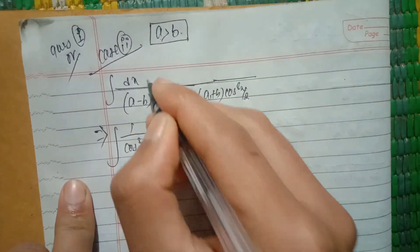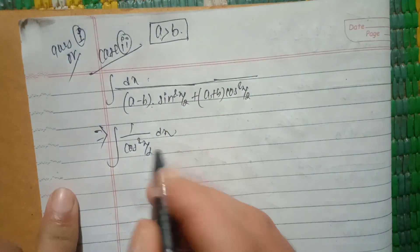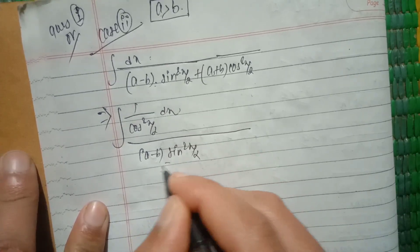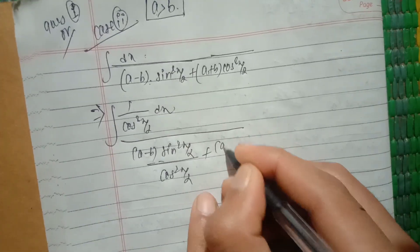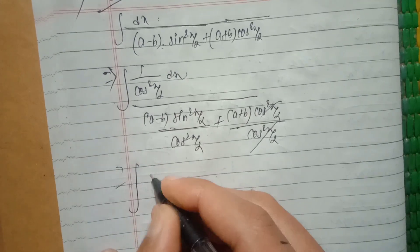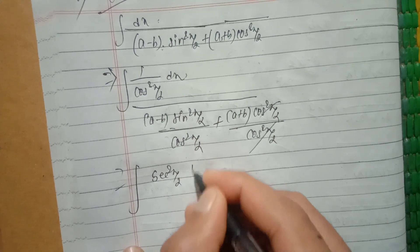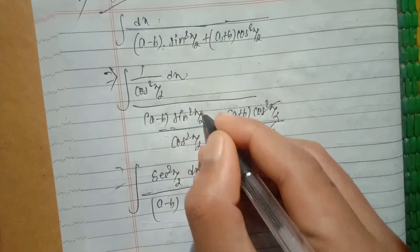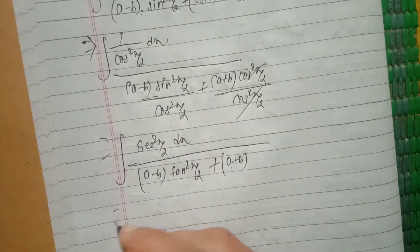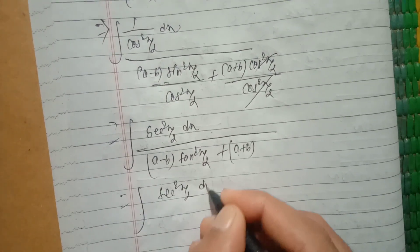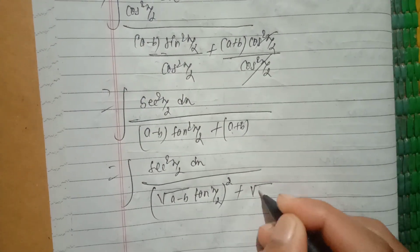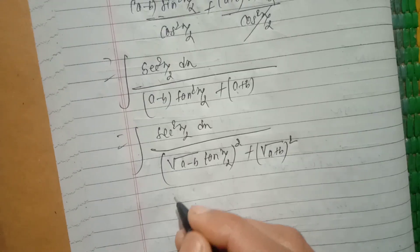Dividing by cos square x by 2, numerator and denominator: (a minus b)·sine square x by 2 divided by cos square x by 2, plus (a plus b)·cos square x by 2 divided by cos square x by 2 cancel. This gives sec square x by 2 dx divided by (a minus b)·tan square x by 2 plus (a plus b), whole square.